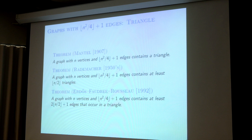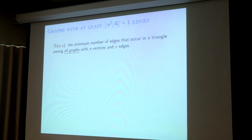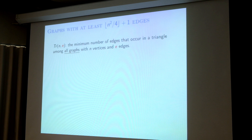So what else can you say? Well, you can ask about graphs with more edges, but still fix the number of edges. Instead of looking at graphs with n²/4 + 1 edges, you look at graphs with a fixed number of edges, say e edges. You fix the number e — which should be at least n²/4 + 1 — and you want to ask the same question. So basically we are studying this parameter tr(n, e): the minimum number of edges that occur in a triangle among all graphs with n vertices and e edges.